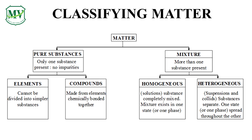Let's review. Are you ready? Complete what I will say. Look at the chart as a clue. Number one: Matter can be generally classified into two categories, namely pure substance and... Mixture! Did you get it right? Excellent! Number two: Pure substance can either be compounds and... Elements! Did you get it right? Wonderful!